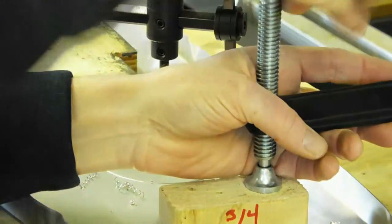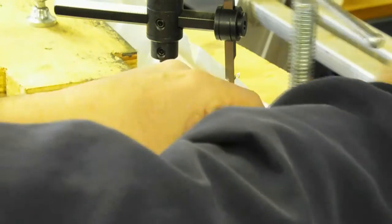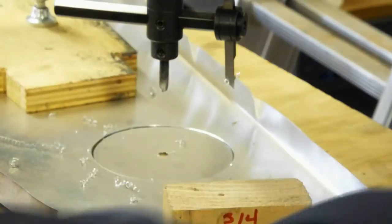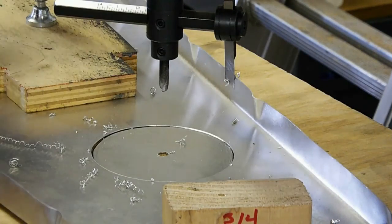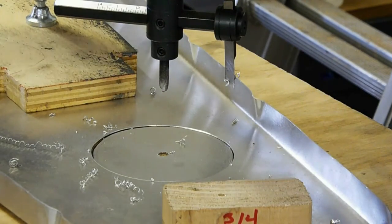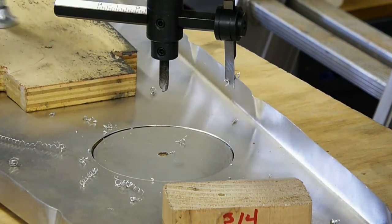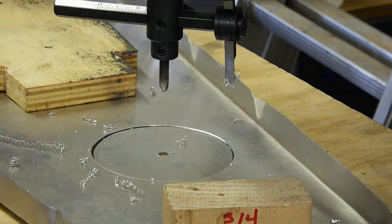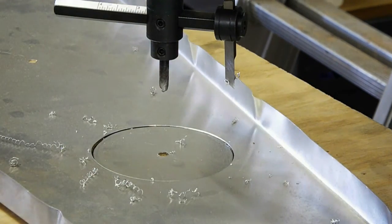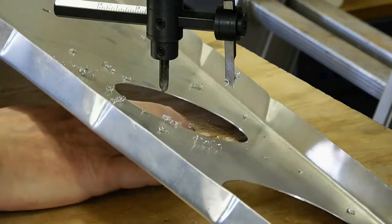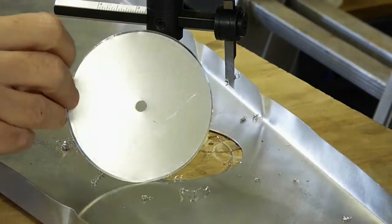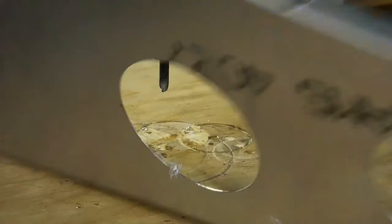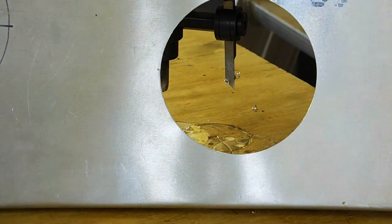So we'll go ahead and pull up the clamps real quick. There's the cut disc. Of course, there is the cut disc. And then the actual cut flange.